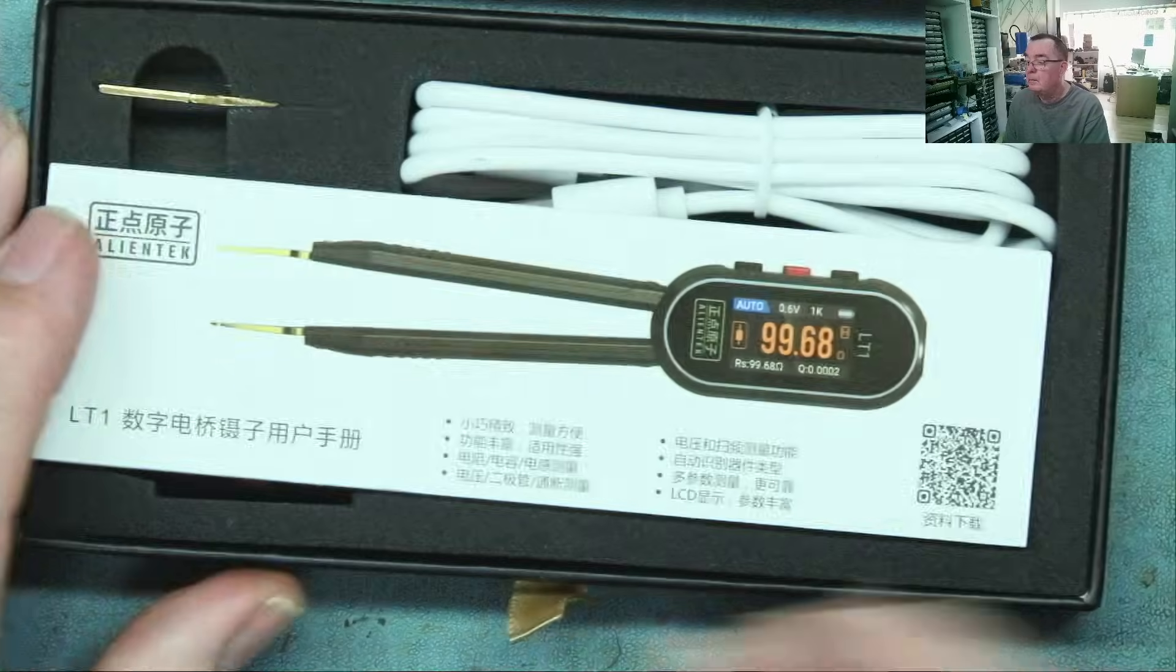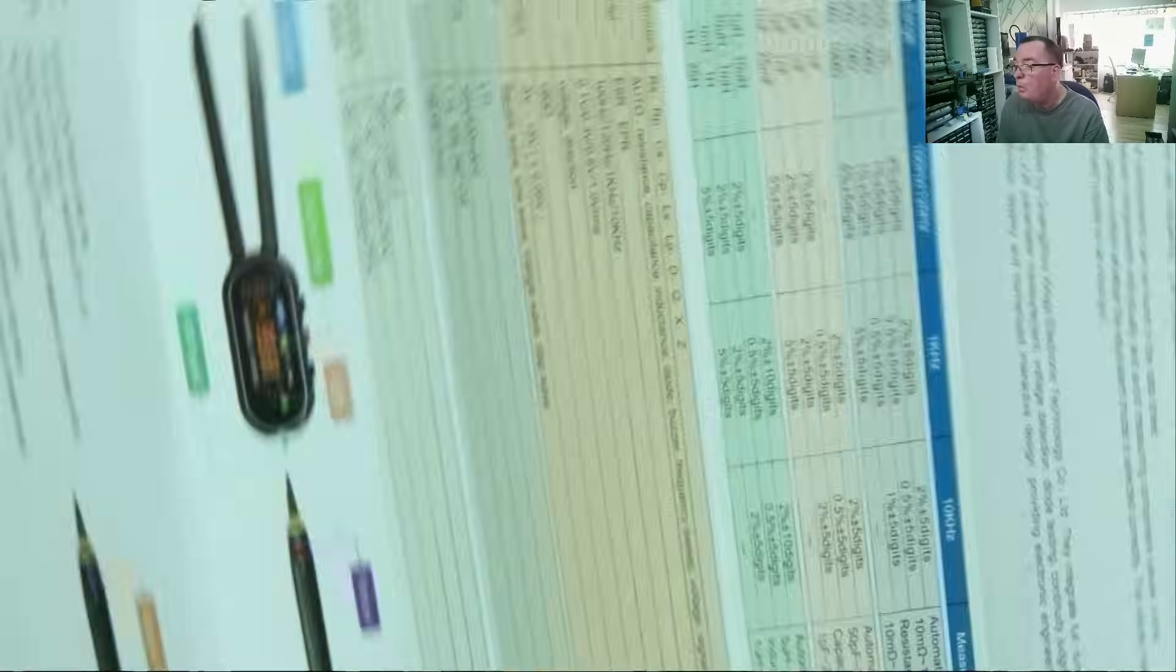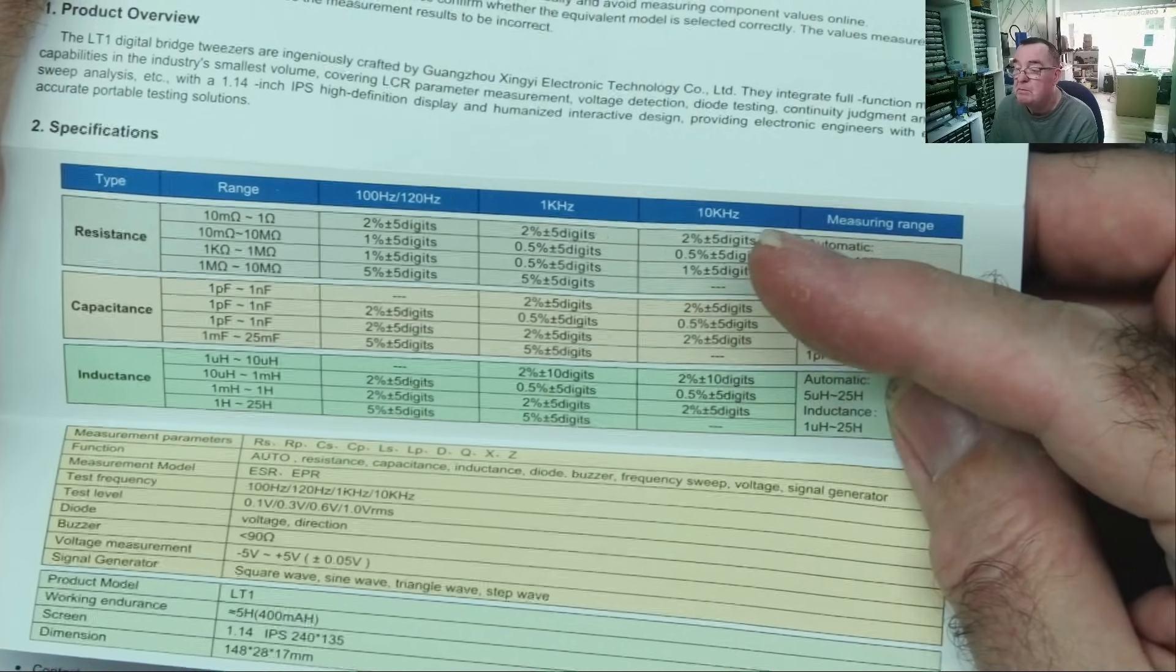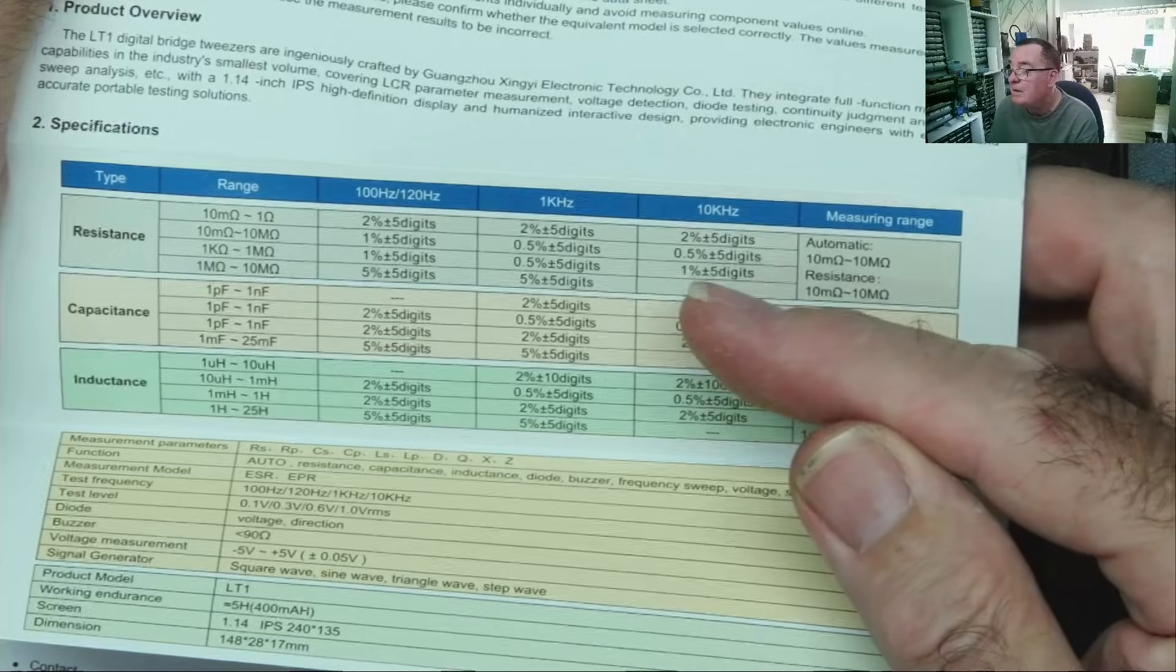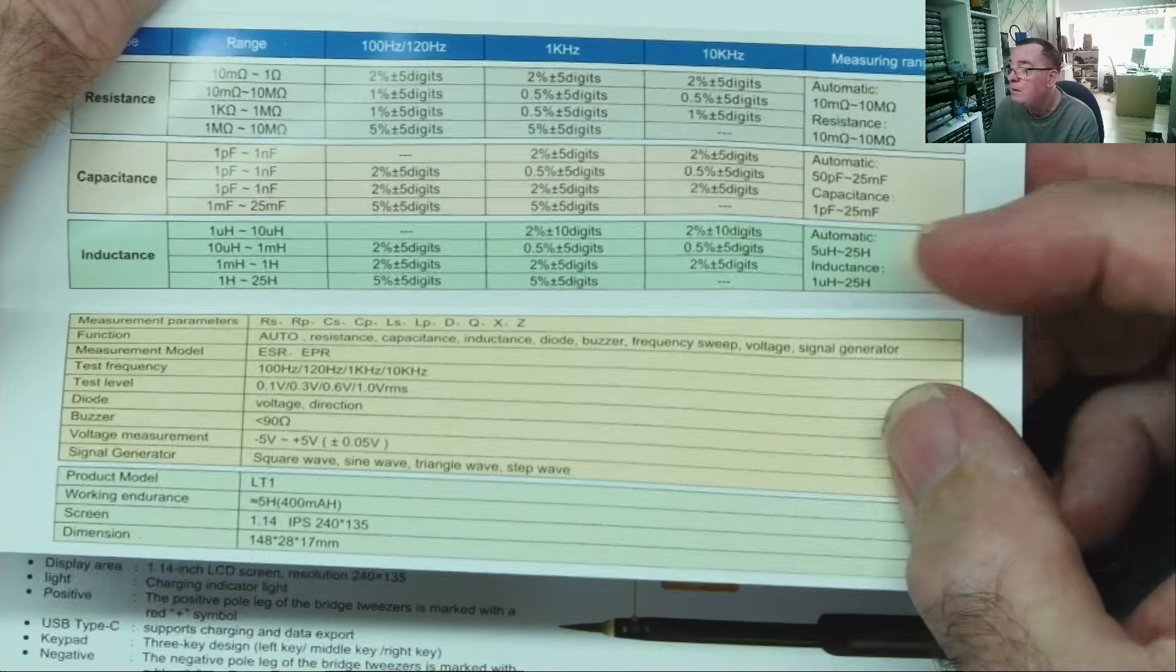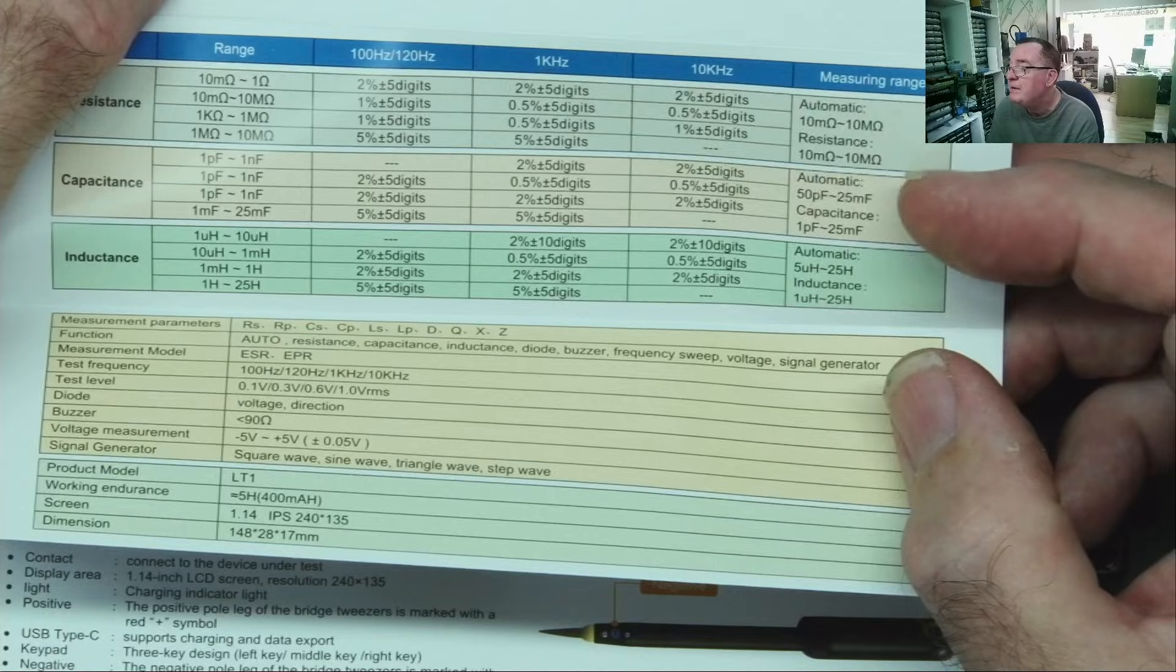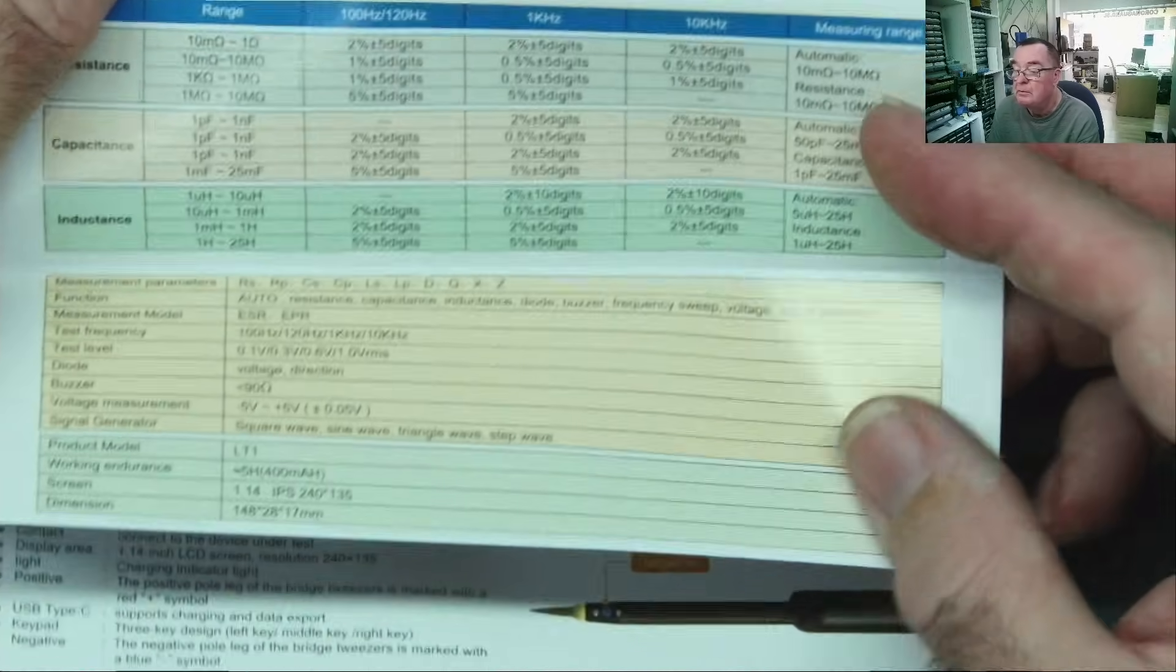Let's look at the tweezers. We have a user manual in Chinese and English. We can see measurement ranges here: from 10 milliohms to 1 ohm. This is a very low resistance range, actually. Up to 25 millifarads or 25,000 microfarads. Inductors from 1 microhenry. The automatic range starts at 5 microhenries. If you choose the inductance range, it starts at 1 microhenry.